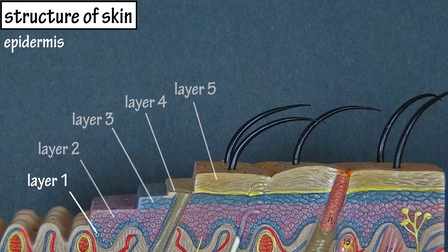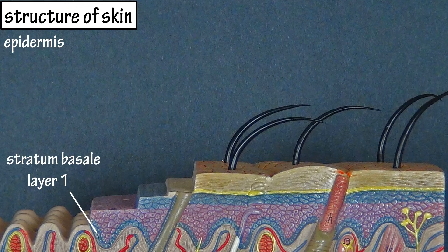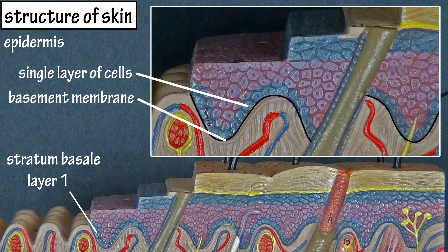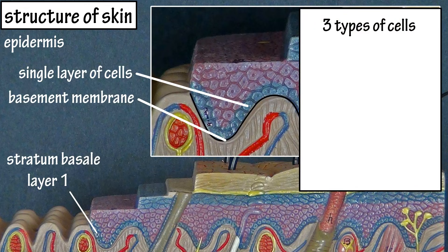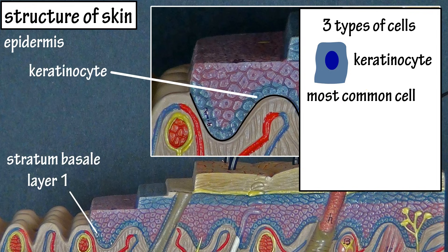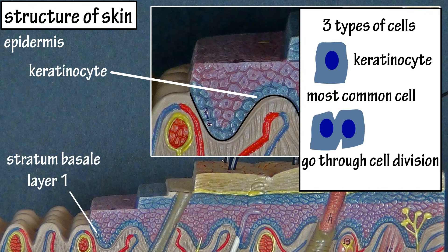The bottom or deep layer is called the stratum basale. It is made up of a single layer of cells attached to a basement membrane. There are three types of cells in the stratum basale: keratinocytes, melanocytes, and tactile cells. Keratinocytes are the most common cell in this layer, and they go through cell division to replace cells that are shed from the surface of the skin.